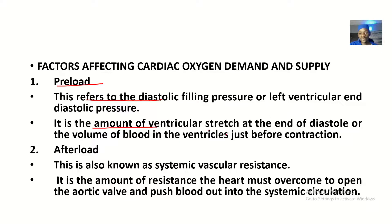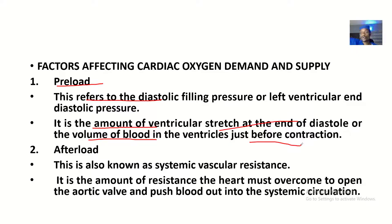Preload affects the end diastolic pressure. It is the amount of ventricular stretch at the end of diastole, or the volume of blood in the ventricles just before contraction. When the ventricles are relaxed, blood flows in — the volume of blood in the ventricles before it contracts to shoot blood out through the aorta is what we call preload.